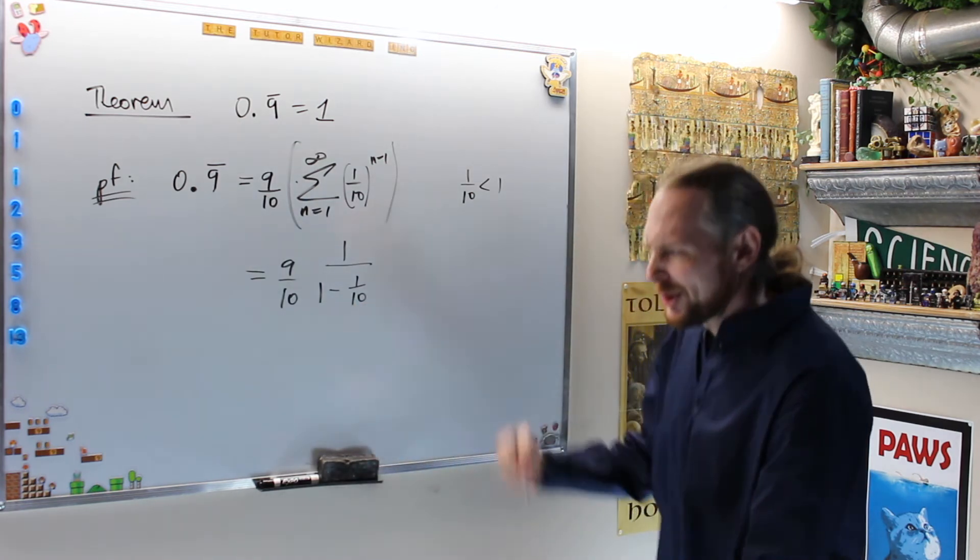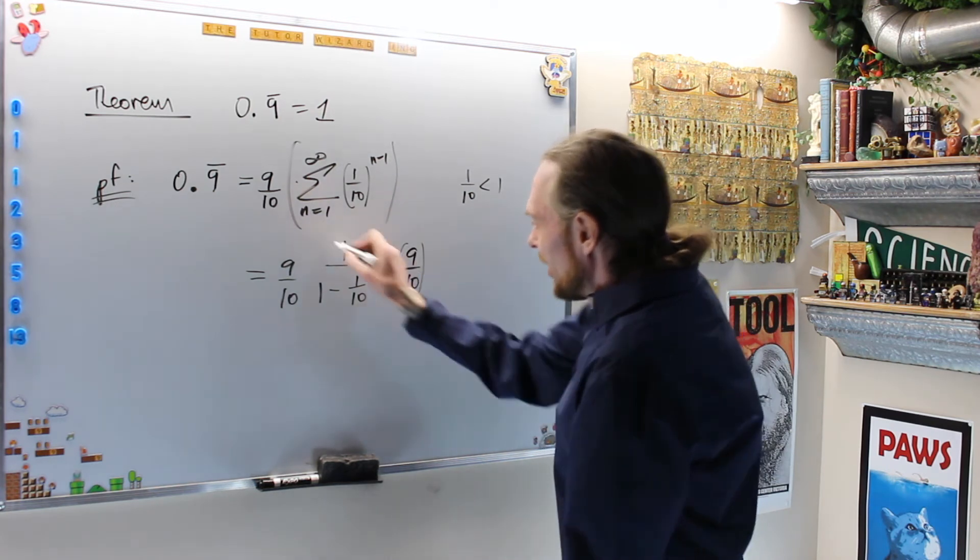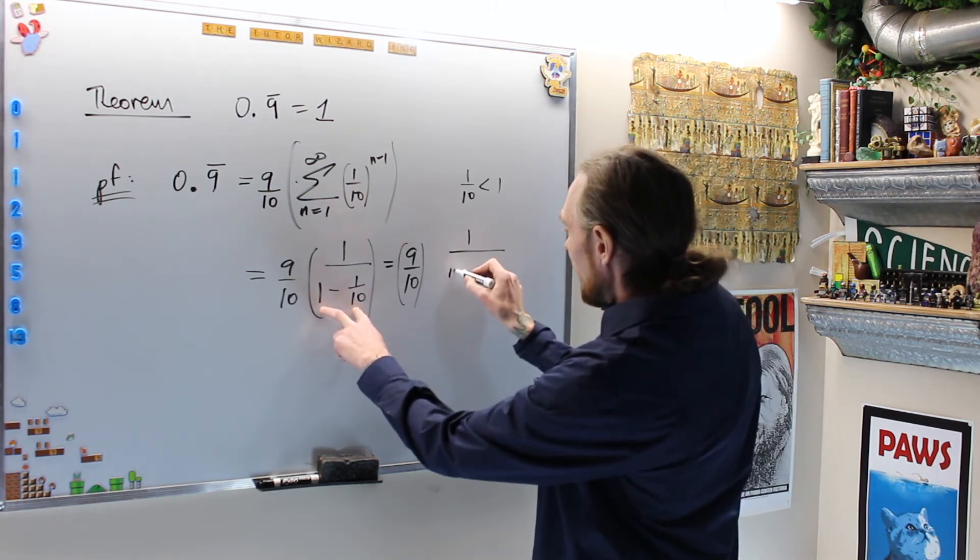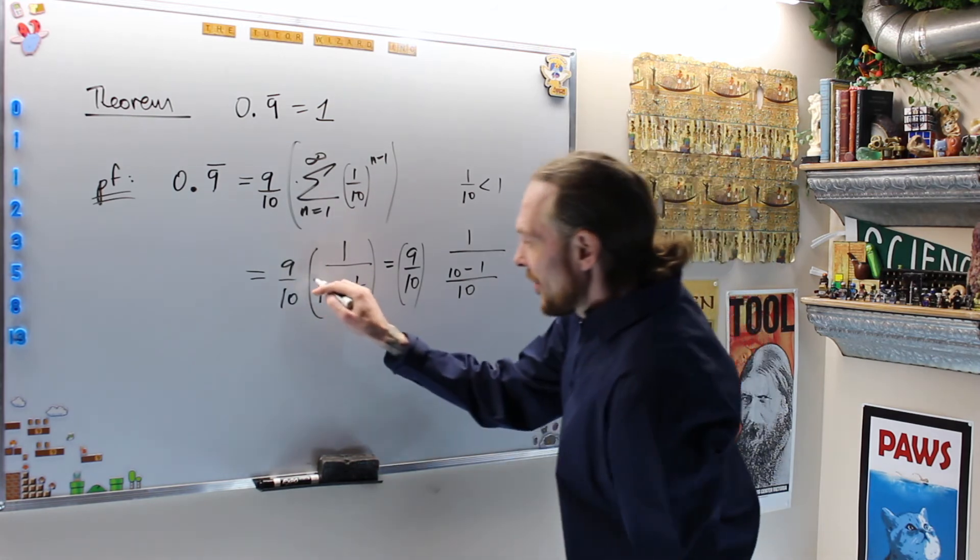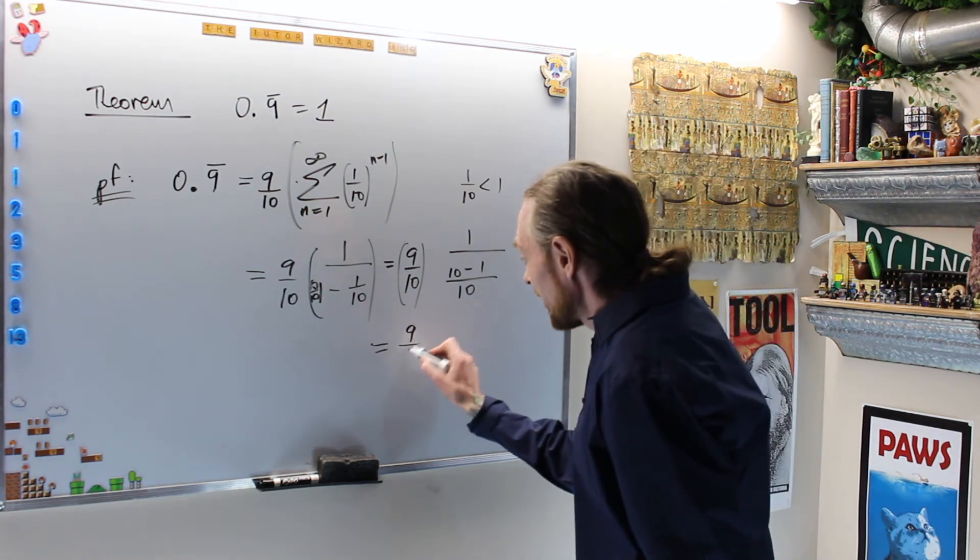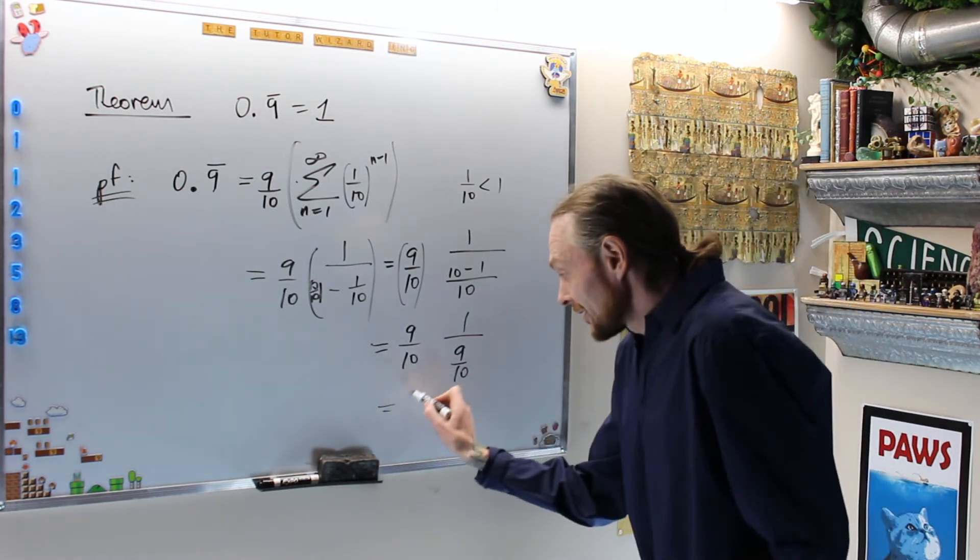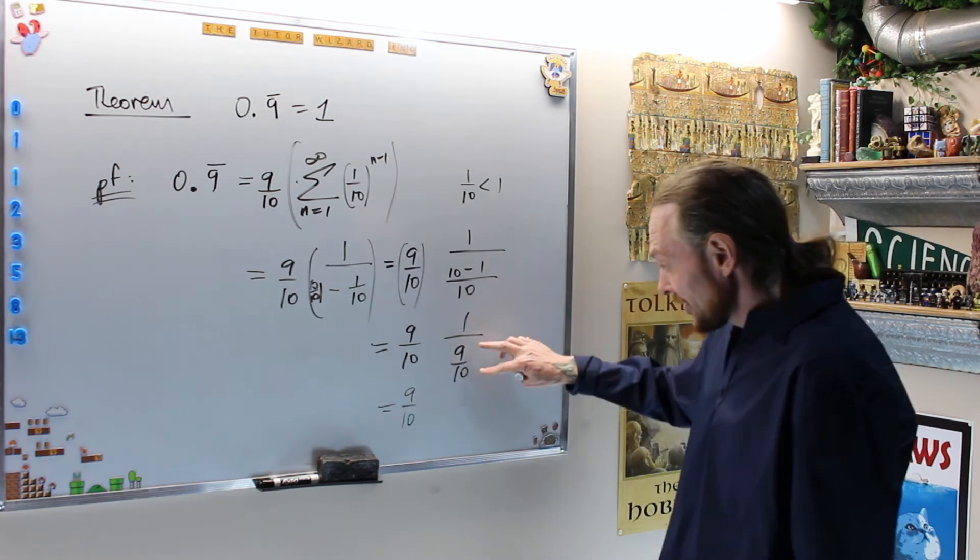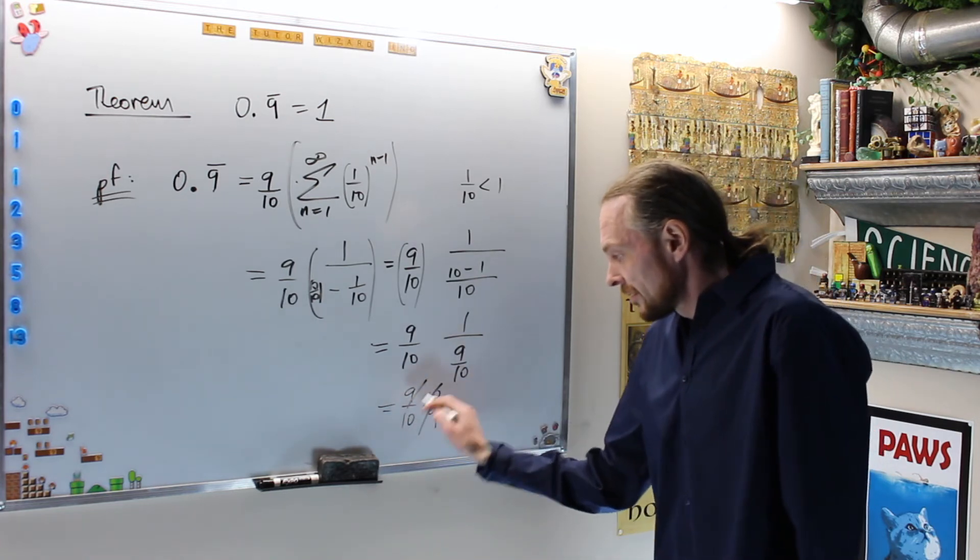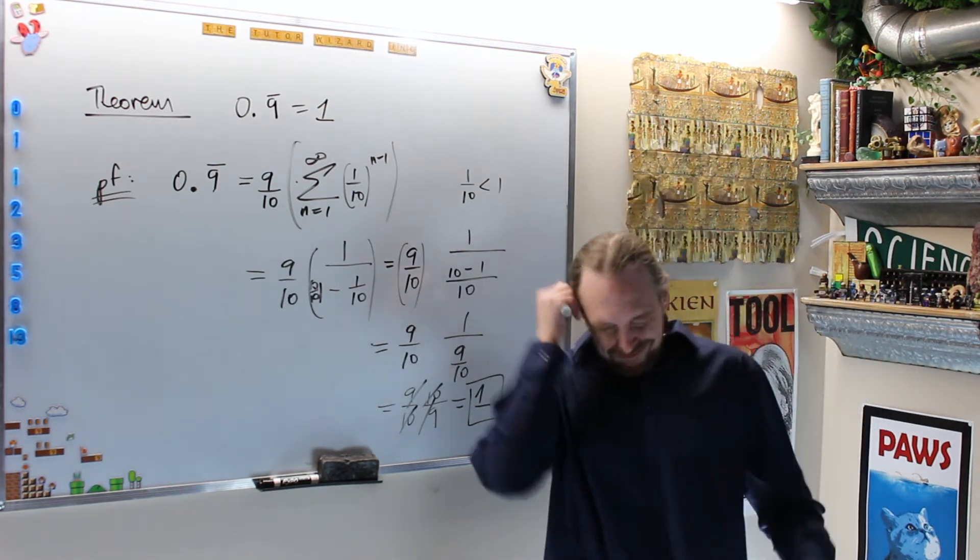So 0.9 repeating equals (9/10) times the sum from n=1 to infinity of (1/10)^(n-1). Because 1/10 is less than 1, this converges to (9/10) times 1/(1 - 1/10). Now let's multiply fractions to show this equals 1. Brackets first - I need to do 1 minus 1/10. I get a common denominator: 10/10 minus 1/10 gives me (9/10) divided by (9/10). When you divide fractions, flip and multiply: (9/10) times (10/9) equals 1. It equals 1. Mind-blowing.